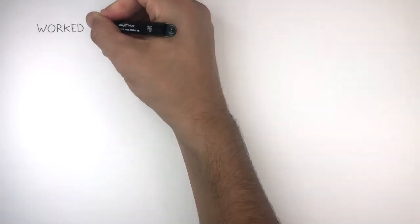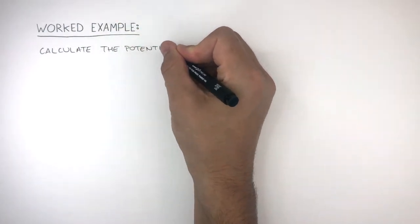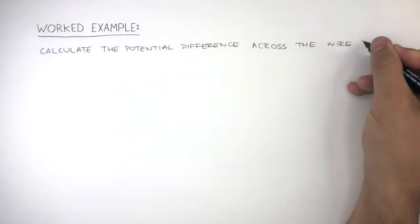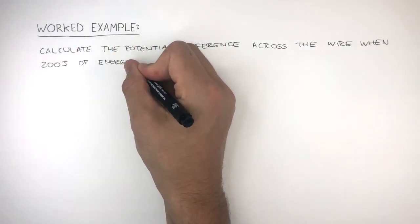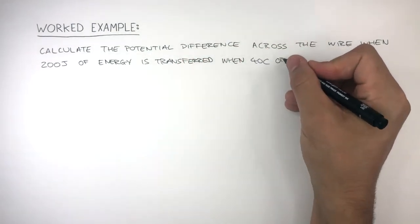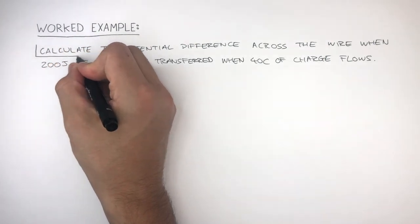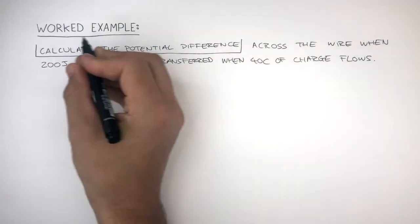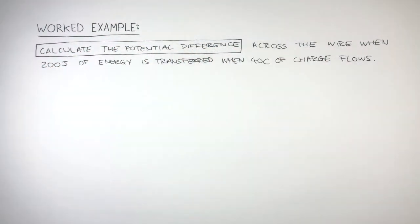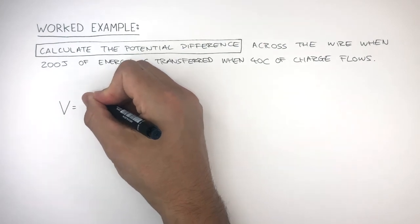In this worked example, you need to calculate the potential difference across the wire when 200 joules of energy is transferred when 40 coulombs of charge flows. As the question is asking us to calculate the potential difference, we draw a box around this. The equation to calculate the potential difference is V equals E over Q.